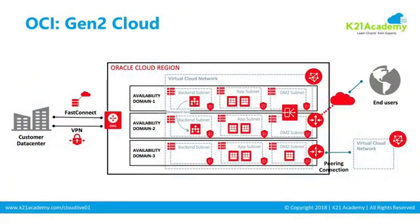This diagram shows the Oracle Cloud Infrastructure generation 2 cloud. On the outer boundary is a region. Within a region, you have something called an Availability Domain — here three Availability Domains are represented. A region is basically a data center; for example, Ashburn in North America is one region.